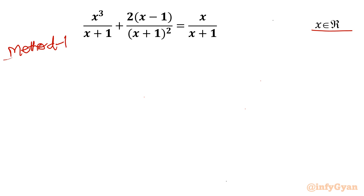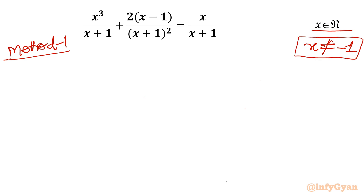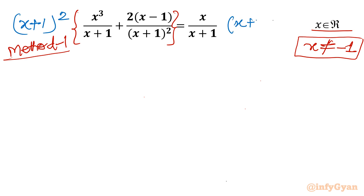Let us get started with Method 1: method of factorization and algebraic identities. First I will write the domain. The denominator cannot be 0, so x cannot be negative 1. We can multiply both sides with (x+1)² so the equation will be denominator free.